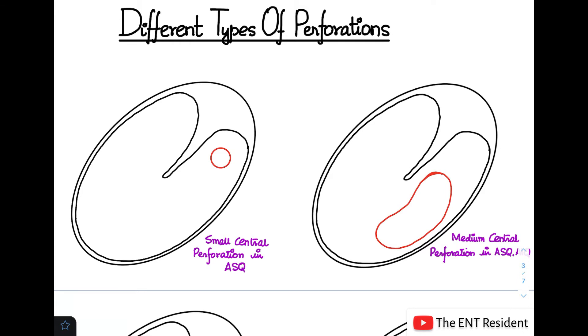For all the different types of perforations, let's start with the first one. The first one that I've drawn is a small central perforation in the anterosuperior quadrant. All you have to do - you know that this is the anterosuperior quadrant over here - and here you make a small circle, whatever the size you have noticed, and this becomes the small central perforation.